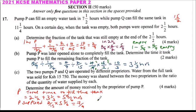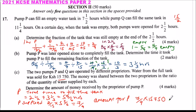Since P supplied 7 over 9 of the tank, the amount for operator P will be 7 over 9 multiplied by 15,750 Kenyan shillings, which gives 12,250 Kenyan shillings. That is the amount that P would receive.